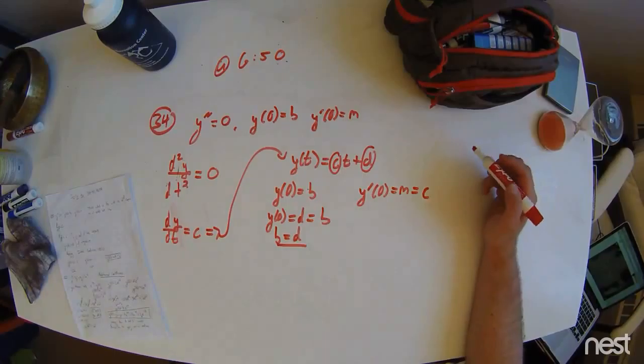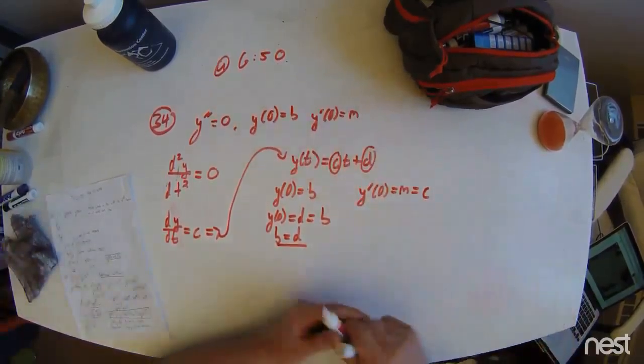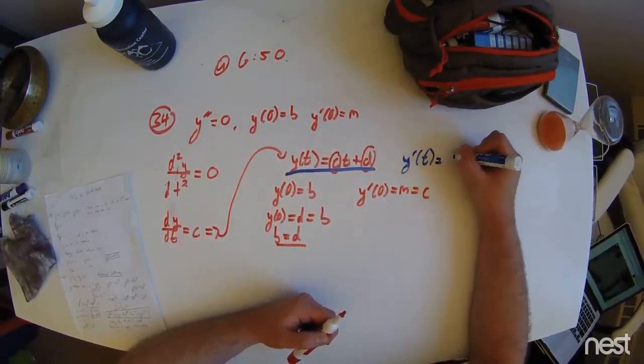We use the first derivative of this expression right here. This y of t is y prime of t, which equals c.